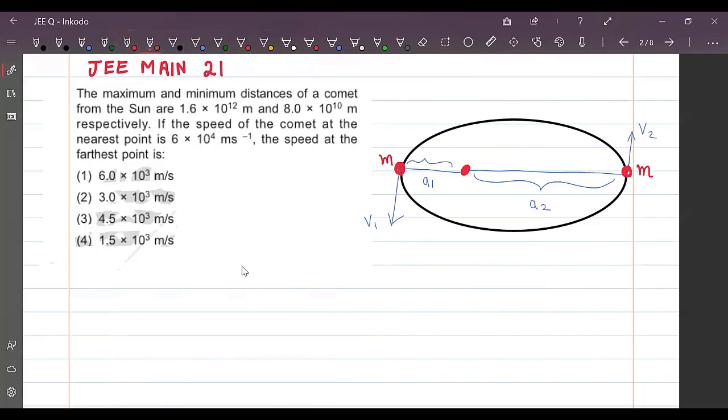So you can write the angular momentum L is equal to m a1 v1, that will be equal to m a2 v2. m will get cancelled out because angular momentum will be conserved. It is a two mass system and the forces are central forces, there are no net external forces.